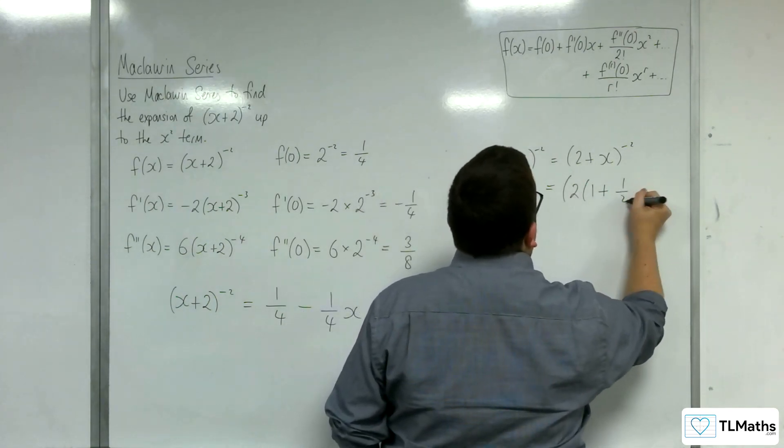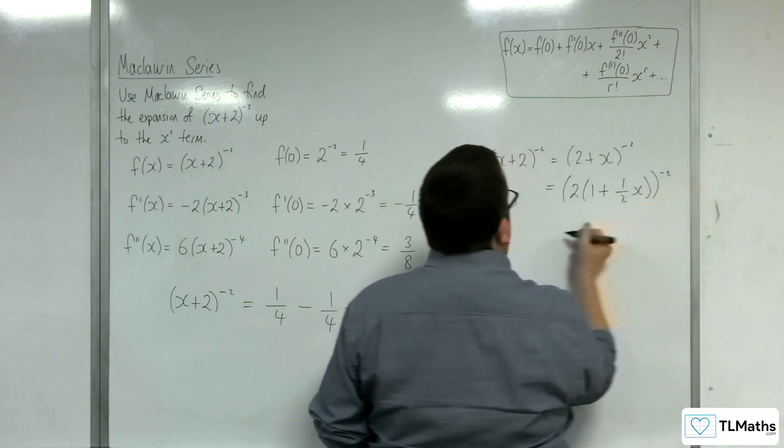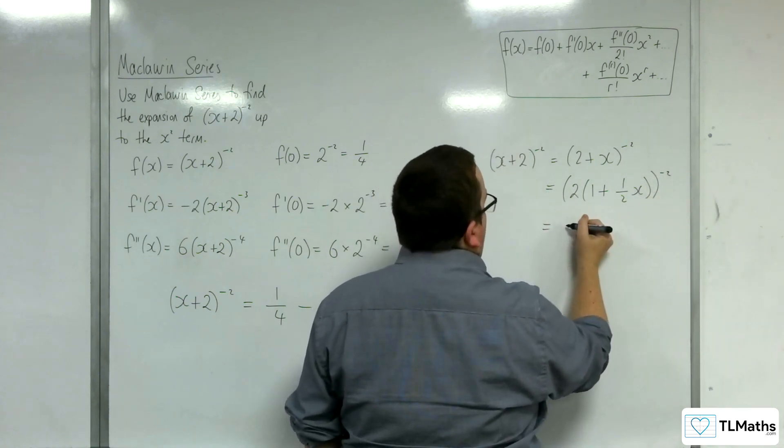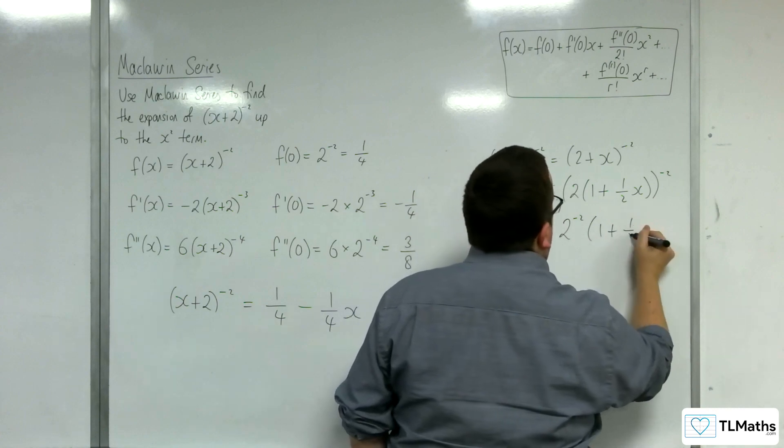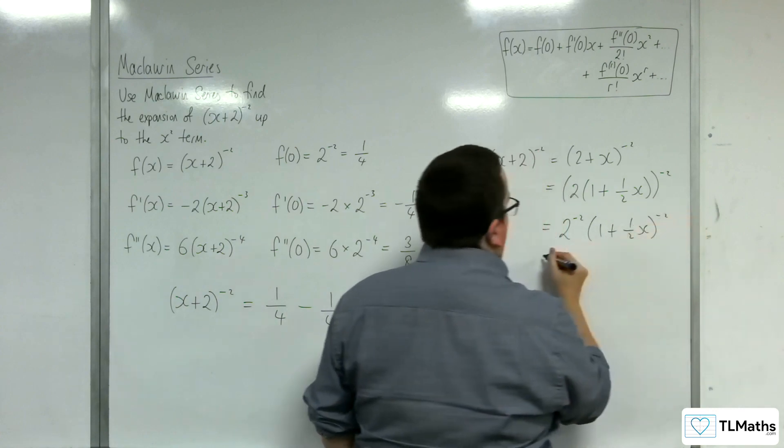So we've got 2^(-2) on the outside, (1 + 1/2 x)^(-2).